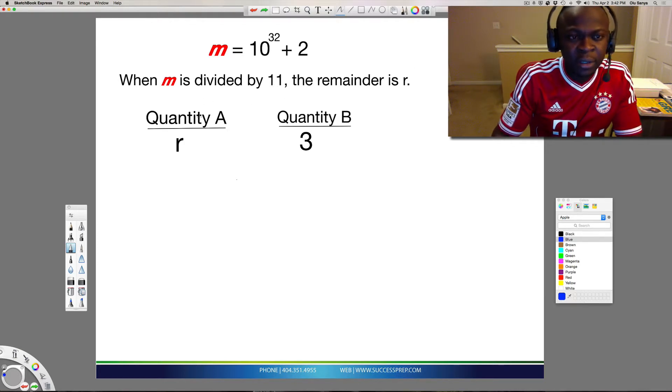Now, on the GRE, in the quantitative comparison section, you have to compare the value of quantity A to quantity B. So in this case, we have to find this R first from the question and compare it to 3.